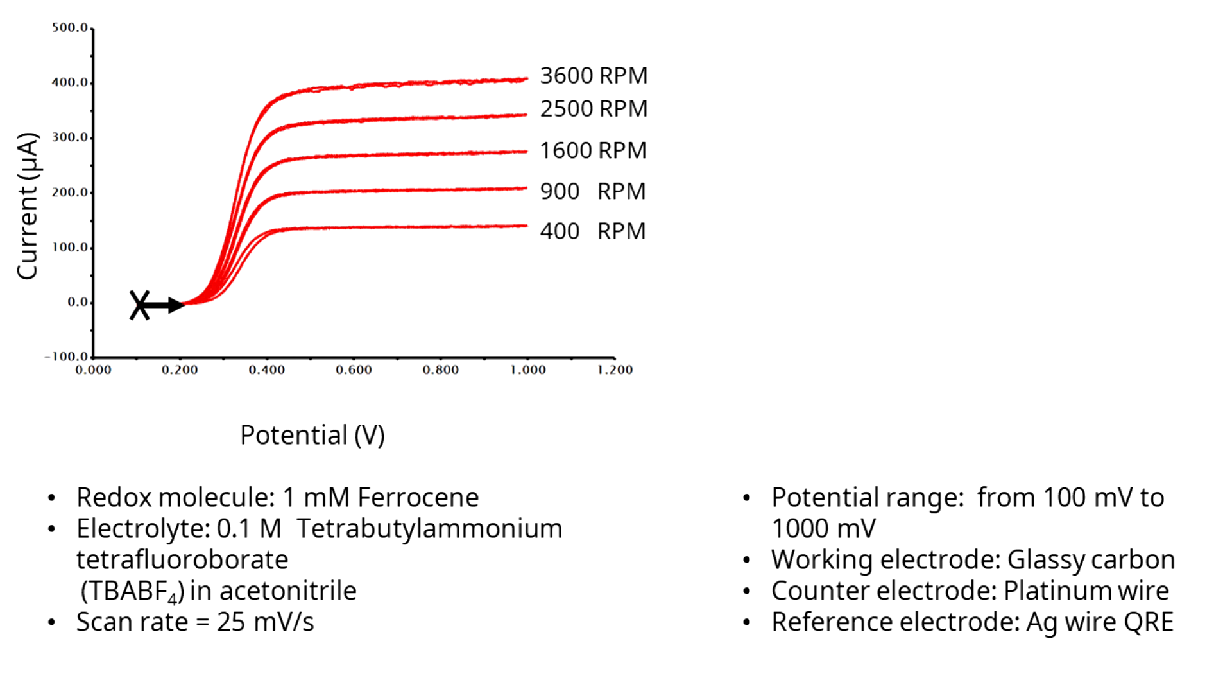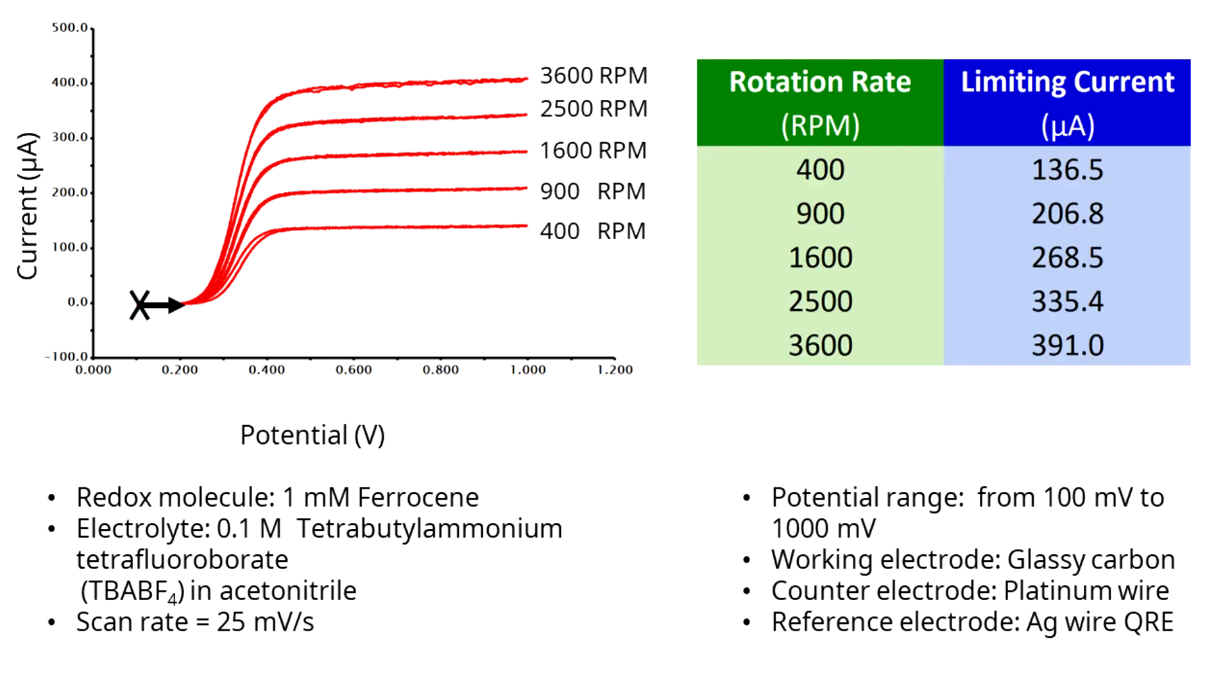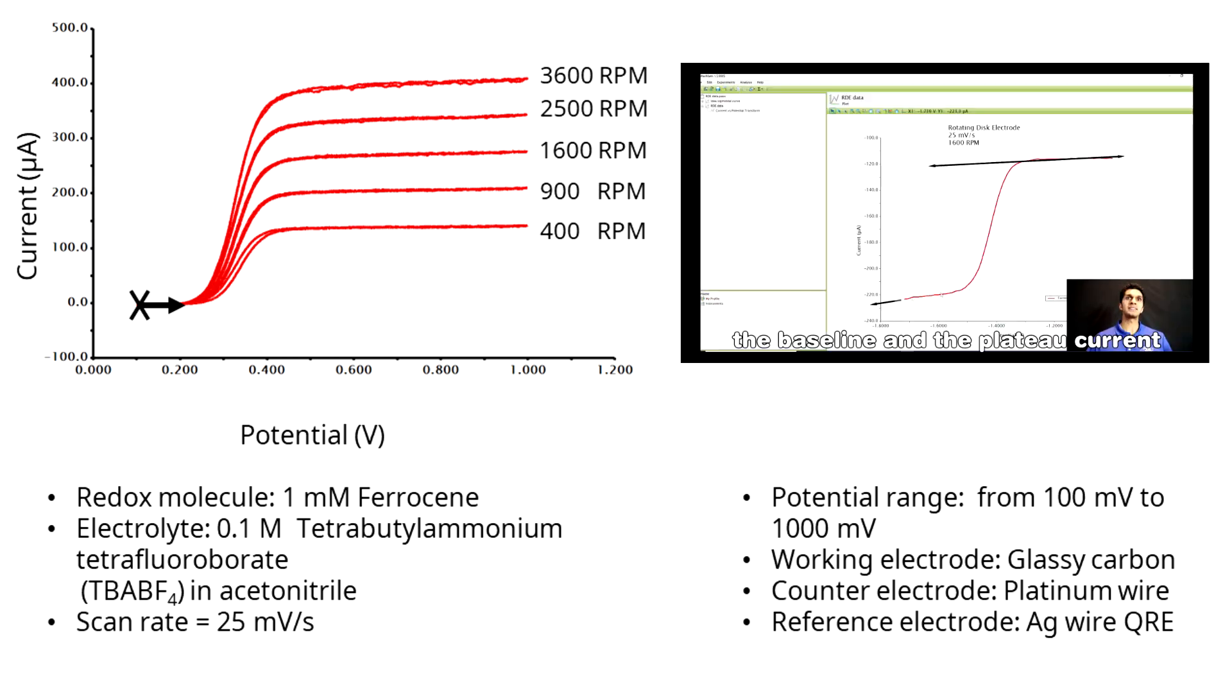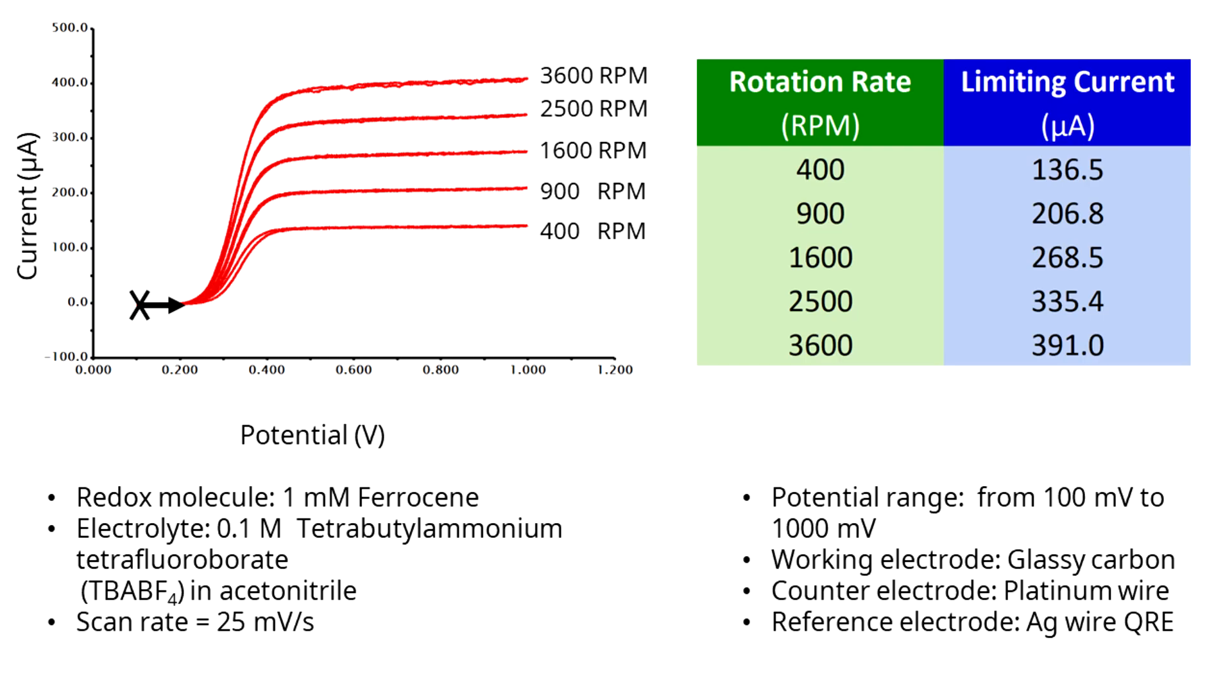We performed rotating disk electrode experiments and collected these S-shaped or steady-state voltammograms at different rotation rates. We then calculated the mass transport limiting current at each rotation rate and we have a separate video on how to calculate the limiting current. Link is in the description below. With the limiting current versus rotation rate data, we will use the Levich equation to determine the diffusion coefficient.